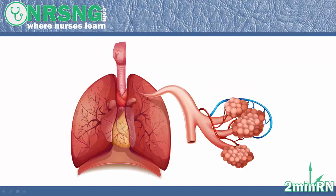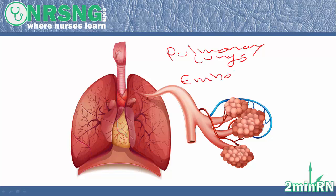First of all, let's discuss what exactly is a pulmonary embolism. You're going to hear pulmonary embolism as PE if you're working in the hospital — everybody's just going to know it as PE. So what is a PE? Well, it's pulmonary — that means lungs — and then it's called embolism. So what's an embolism?